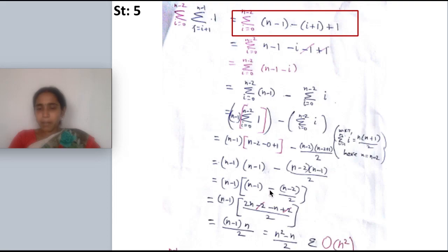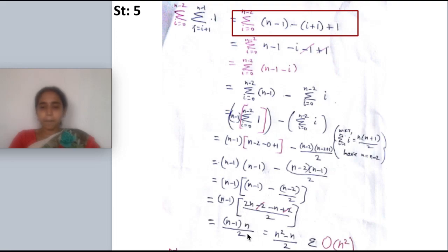Taking LCM of 2: [2(n minus 1) minus (n minus 2)] divided by 2. Multiplying out: 2n minus 2 minus n plus 2 divided by 2. The minus 2 and plus 2 cancel. We get 2n minus n equals n. So the full expression is (n minus 1) times n divided by 2, which equals n squared minus n divided by 2.